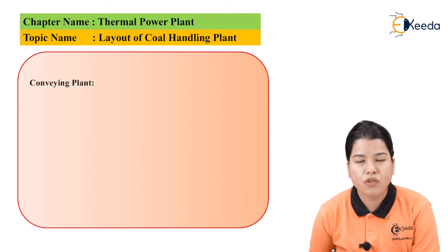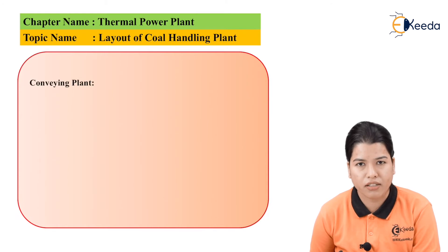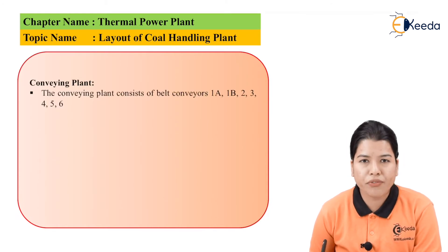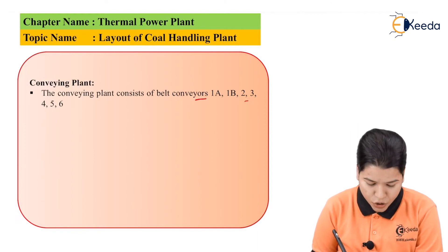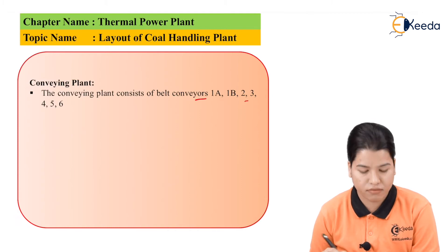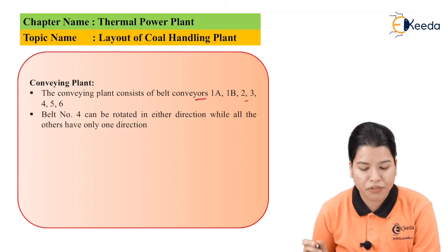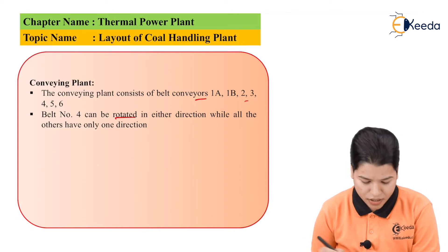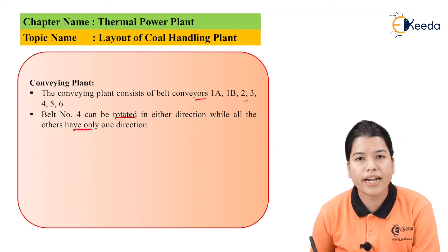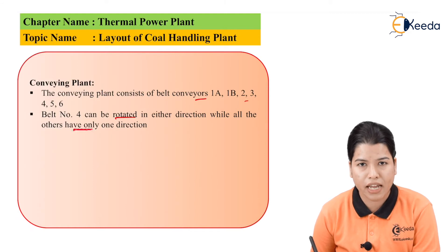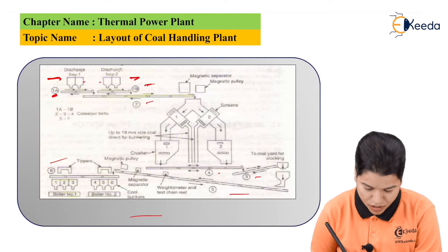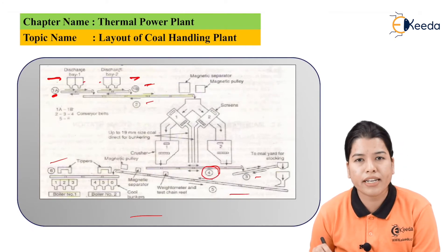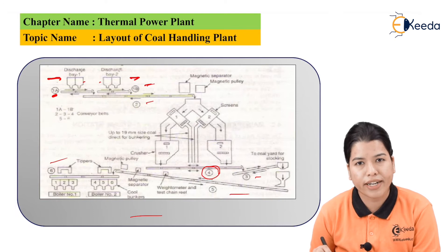Next, let us study about the conveying plant. Once the coal is unloaded, it is passed further by using the conveying belts. The conveying plant consists of conveyor belts 1A, 1B, 2, 3, 4, 5, and 6. Belt number 4 can be rotated in either direction, while the others have only one direction. As we can see in the diagram, belt number 4 can be rotated in either direction, and all the remaining belts have only one direction.